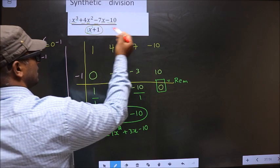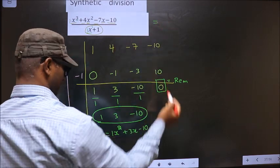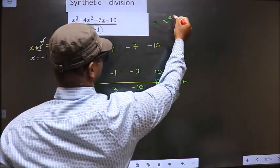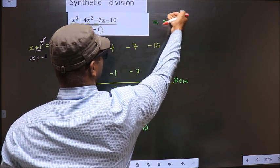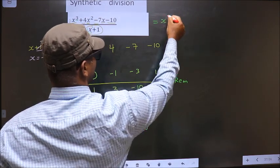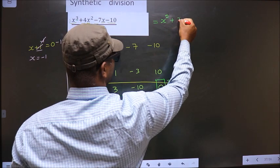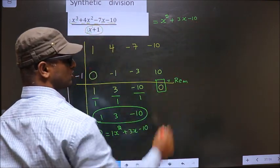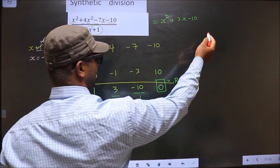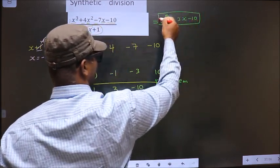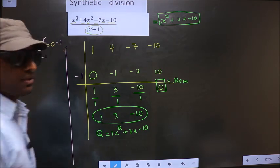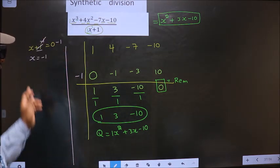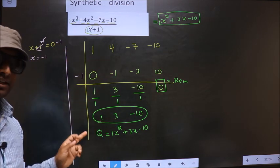So now this equal to x square plus 3x minus 10. Remainder is 0, so we don't need to write that. So now this is our answer. Am I clear?